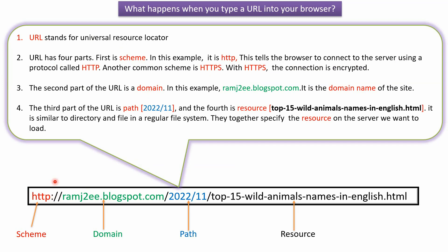A URL has four parts. The first part is the Scheme. In this example, the scheme is HTTP, which tells the browser to connect to the server using the protocol called HTTP. Another common scheme is HTTPS. With HTTPS, the connection between the browser and the web server is encrypted. The second part of the URL is the domain — in this case, ramj2e.blogspot.com, which is the domain name of the site.